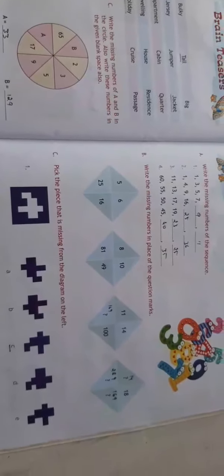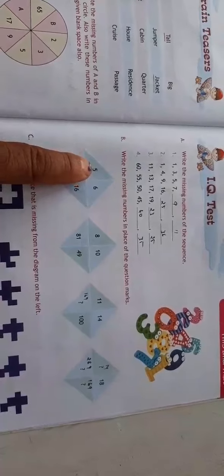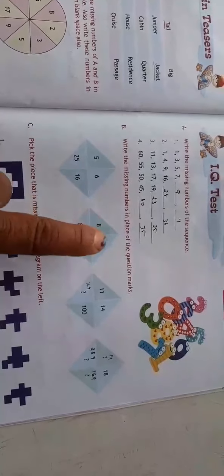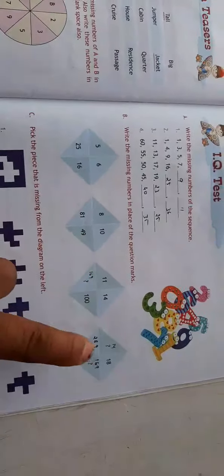Now in this you have to check question number B. Write the missing number. If you check, you will get there is a sequence going on. Addition of 3 going on. So it becomes 14. Then 25, 18. There is a sequence which is actually going on. You have to check them. Answers are given.